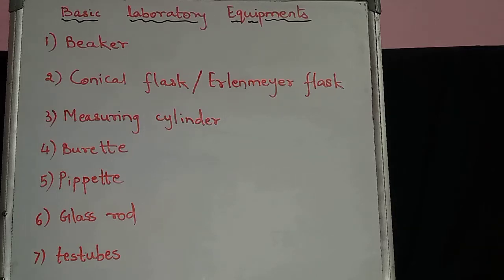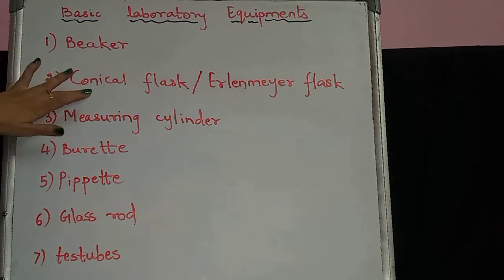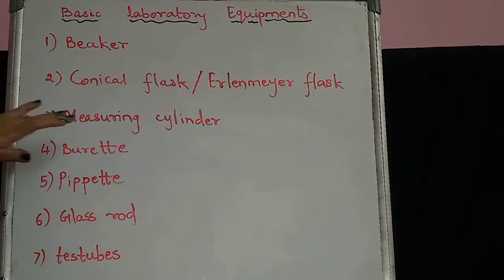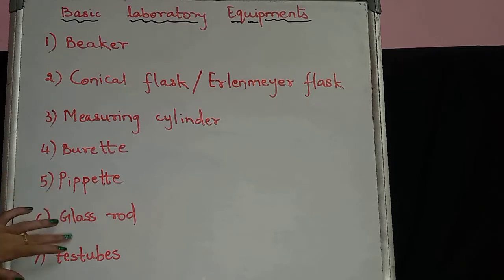Hello everyone, today I am going to show you some basic laboratory equipment. We use different apparatus in chemistry to perform chemical analysis: beaker, conical flask (also called Erlenmeyer flask), measuring cylinder, burette, pipette, glass rod, test tubes, and retort stand. So let's start.